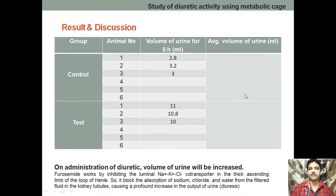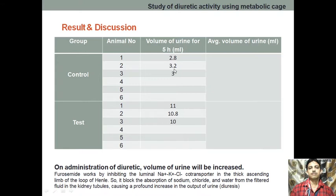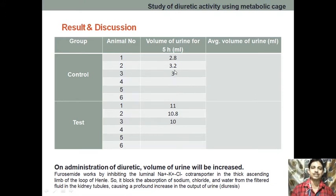From these experiments, we can see that in the test group the volume of urine is approximately 10 ml, whereas in the control group it is almost 3 ml. The result is directly showing that the drug showed diuretic activity.